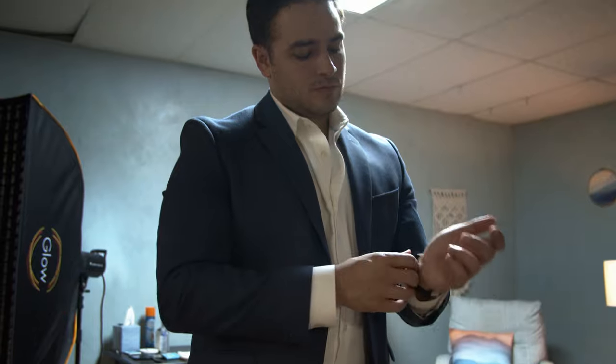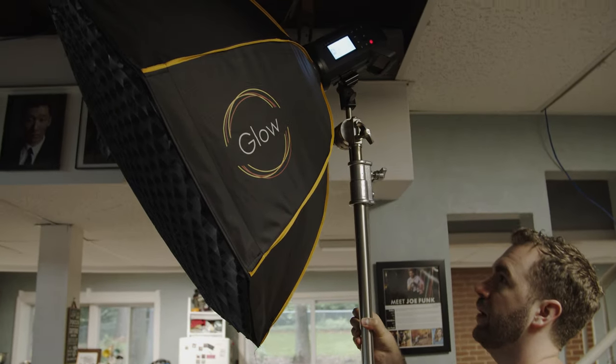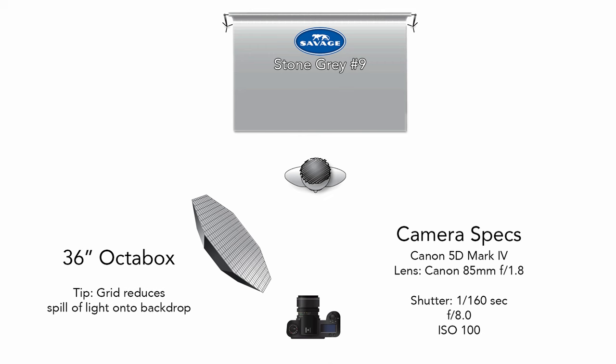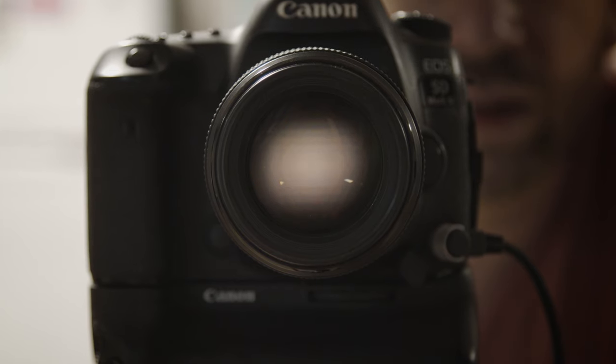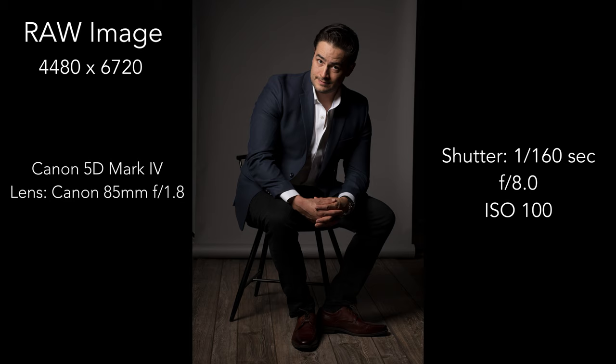Atlanta actor Torin Kavens Flores sat in for this editorial shoot. Only one light was used for this setup. It was placed at a 45-degree angle from Torin, creating that classic Rembrandt lighting. The grid prevented additional light from spilling onto our gray backdrop, allowing for even more options in Photoshop when it comes to vignetting. After trying out a few poses, we got a bunch of great shots. Out of camera, our raw image looked a little something like this.